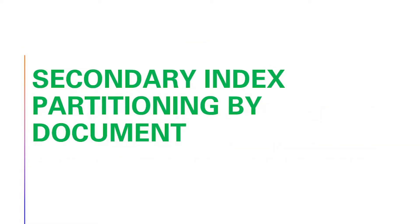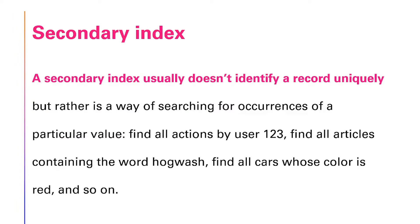Secondary index partitioning by document. Let's first understand what is a secondary index. A secondary index usually doesn't identify a record uniquely, but rather is a way of searching for occurrences of a particular value. Find all actions by user 123, find all articles containing the word hogwash, find all cars whose color is red, and so on.